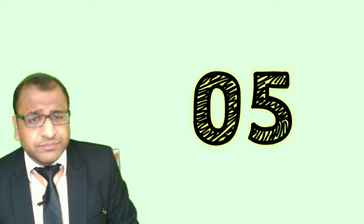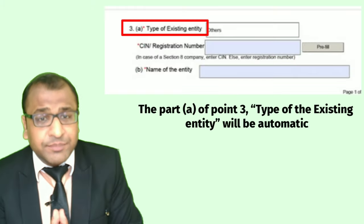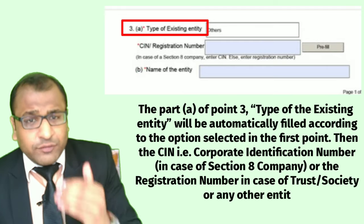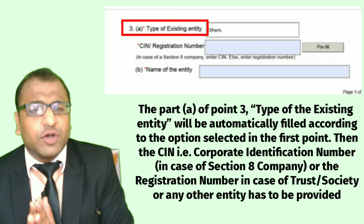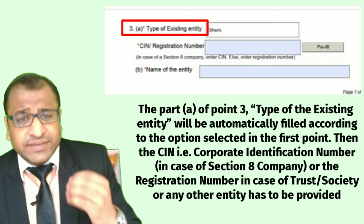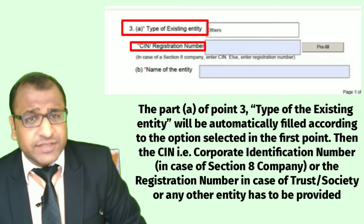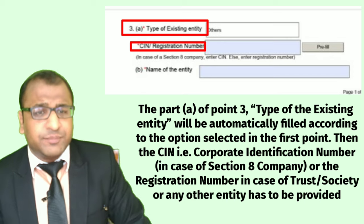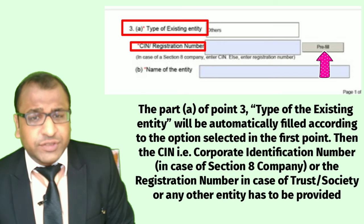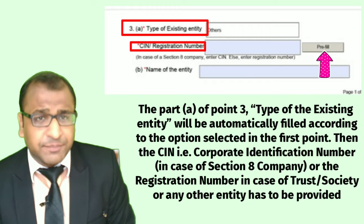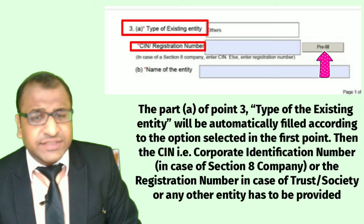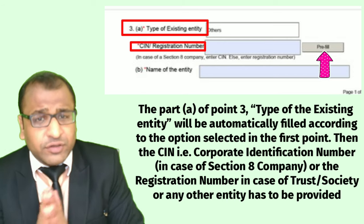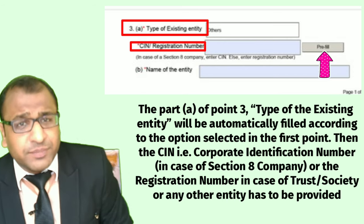Step 5: Part A of Point 3, 'type of the existing entity,' will be automatically filled according to the option selected in the first point. Then the CIN — corporate identification number — in case of a Section 8 company, or the registration number in case of a trust, society, or any other entity, has to be provided. The pre-fill option can be used only for Section 8 companies, as they are already registered with the MCA portal. For all other entities, details such as name, date of incorporation, address, etc., have to be filled manually.